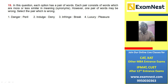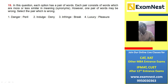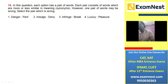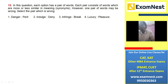In this question, each option is a pair of words which are more or less similar in meaning — they are synonyms. However, one pair may be wrong; select the pair which is wrong. 'Danger and peril' are the same; 'indulge and deny' are not — 'indulge' means to involve in something and 'deny' means to refuse; 'infringe and break' are similar; 'luxury and pleasure' are similar. So the answer is number two — number two is the odd one out.